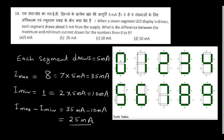When a 7-segment LED display is driven and each segment draws 5 mA, what is the difference between the maximum and minimum current drawn for numbers 0 to 9? Minimum current is drawn for number 1 (fewest segments), and maximum current is drawn for number 8 (all 7 segments). Each segment needs 5 mA across 7 segments, so the answer is 25 mA difference.